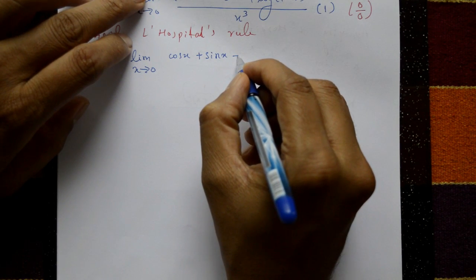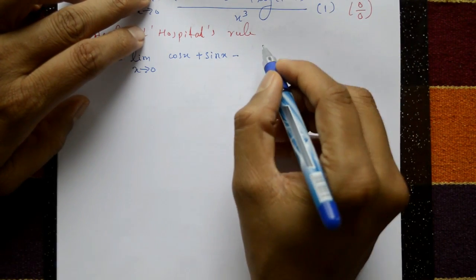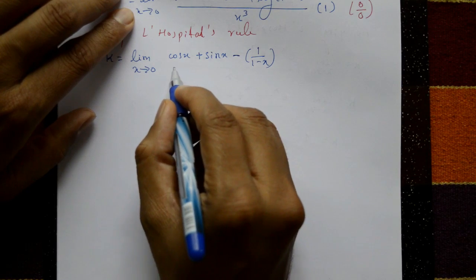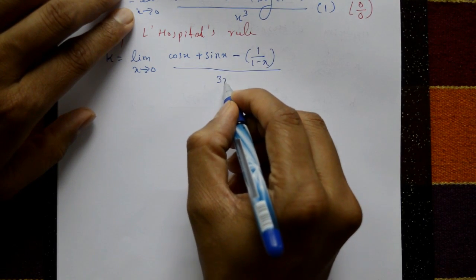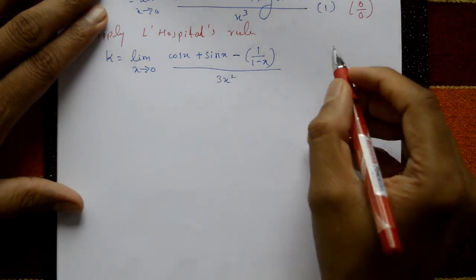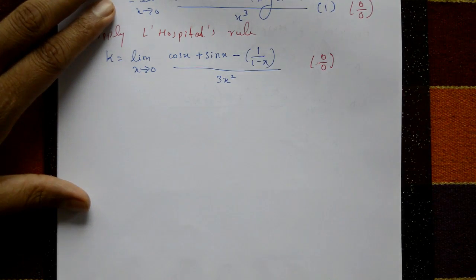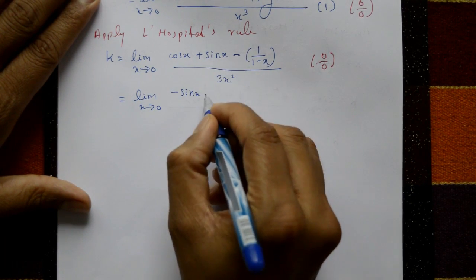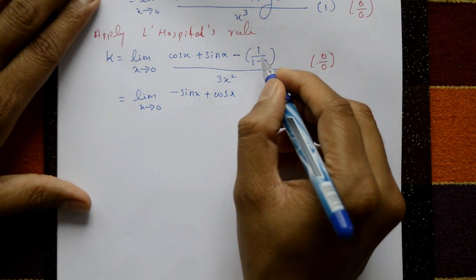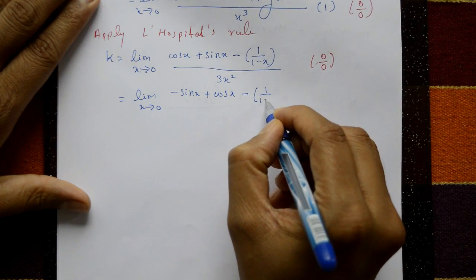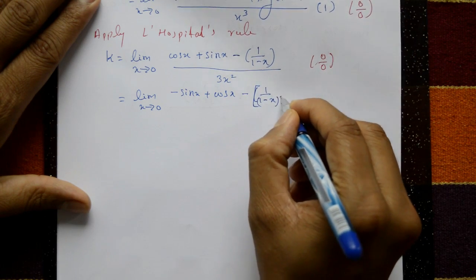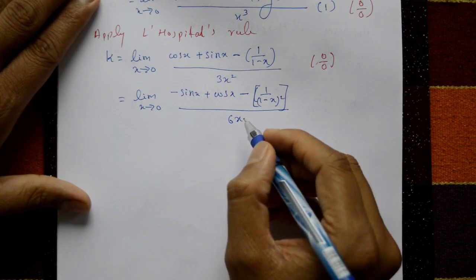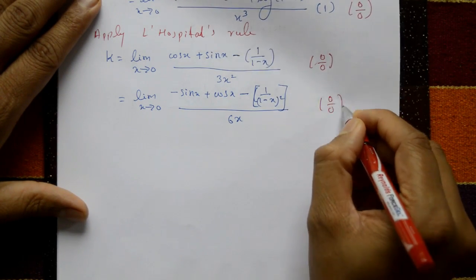Continuing the numerator differentiation: derivative of log(1 - x) is 1/(1 - x) · (-1) = -1/(1 - x). Denominator differentiates to 3x². Substituting x = 0 again gives 0 by 0, so apply L'Hôpital's rule a second time. Differentiating: -sinx + cosx - 1/(1-x)² over 6x — still 0 by 0, so apply L'Hôpital's rule once more.